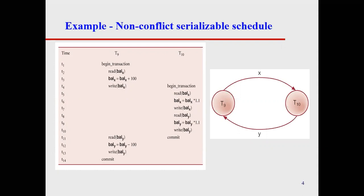A student answers: because from time t5 to t10 there is a gap at t9. Yes — so it is non-conflict at t9 and t10 in operation. Very good! So this is non-conflict — there is no conflict because there is nothing happening in that time, no overlap.